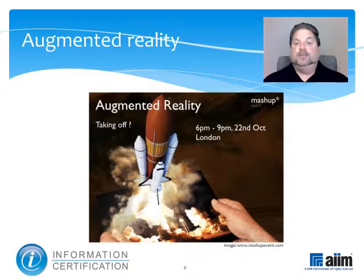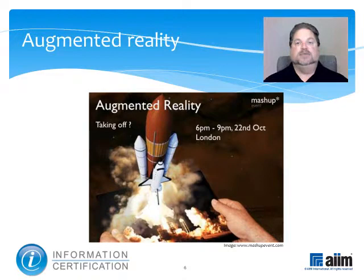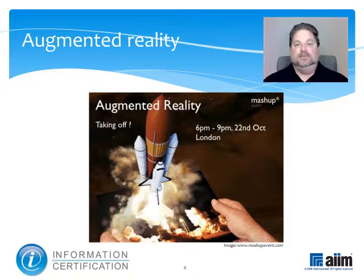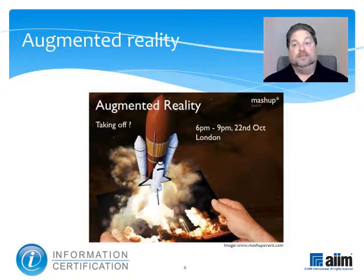Augmented reality is a term for a live, direct, or indirect view of a physical, real-world environment whose elements are enhanced by computer-generated sensory input, such as sound, video, graphics, or GPS data. It's related to a more general concept called mediated reality, in which a view of reality is modified by the computer. These are different than virtual reality, which replaces the real world with a simulated one.